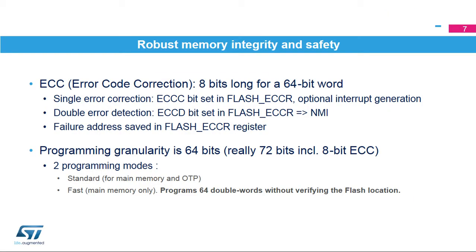The flash memory embeds an error code correction function to ensure robust memory integrity and safety. The ECC is 8 bits long for a 64-bit word. In the case of a single error, it is corrected. The ECCC bit is set in the flash ECC register, and an interrupt is generated if it is enabled. In the case of a double error, it is detected but not corrected. The ECCD bit is set in the flash ECC register, and a non-maskable interrupt is generated. When an ECC error is detected, the failure address and associated bank are saved in the flash ECC register.